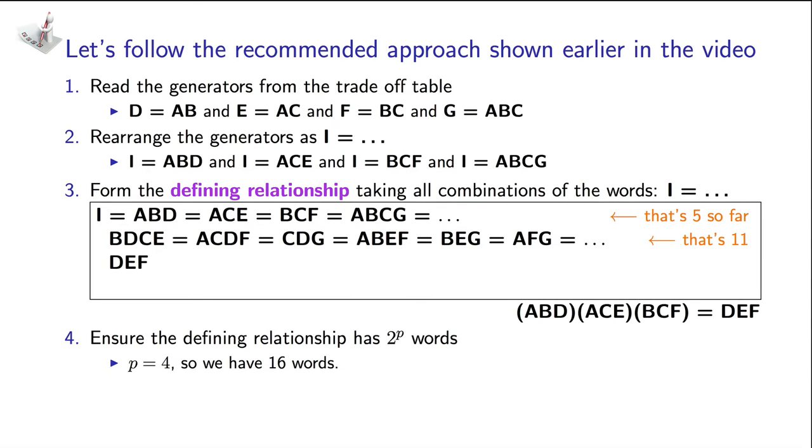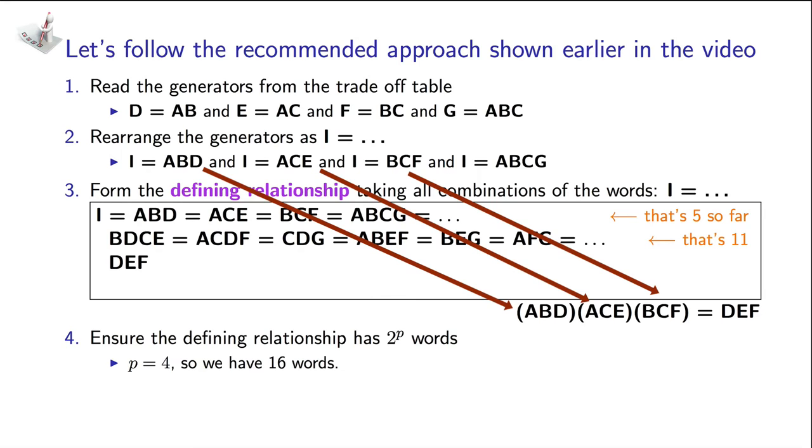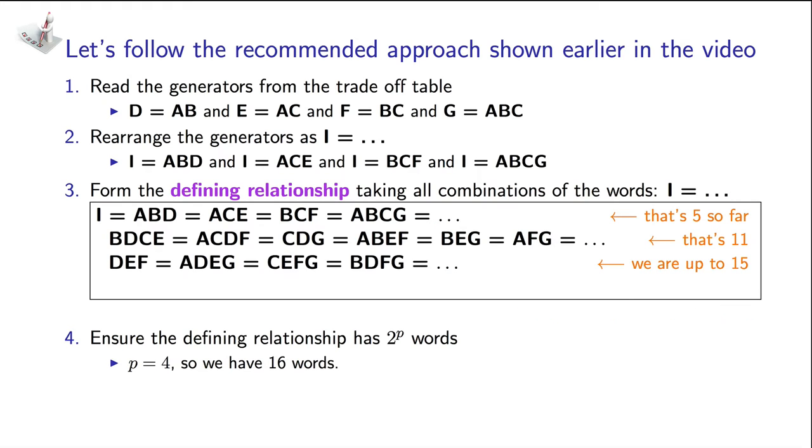The next step is to take our generators three at a time. ABD times ACE times BCF. That equals to DEF. Try the next three. So there we have a total of 15. And the final combination is to use all four generators multiplied together, and that simplifies to ABCDEFG. So here's our complete defining relationship.